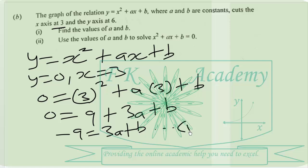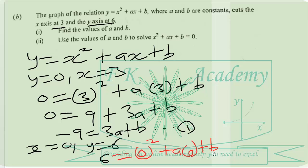Then again, at the point where the graph cuts the y-axis, x equals zero and y equals 6. So we obtain 6 equals zero squared plus a times zero plus b.